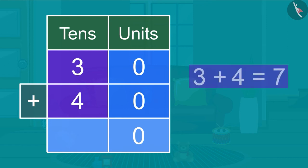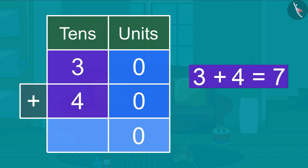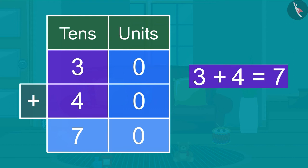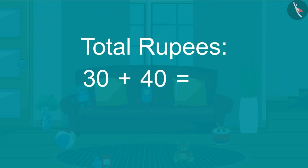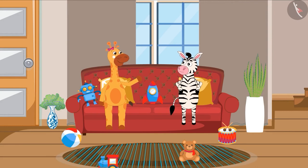Now we will add the numbers written in the tens section. 3 plus 4 equals 7, so we will write 7 under the tens section. We have 70 rupees in total! Yes, this would be enough for the birthday party.